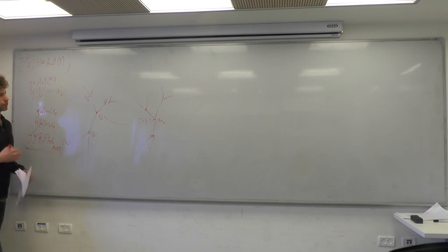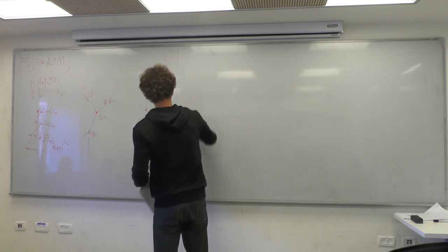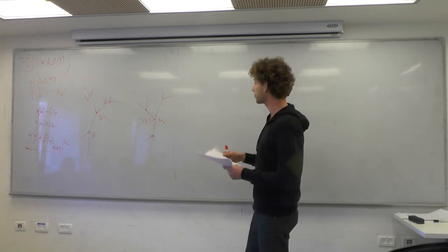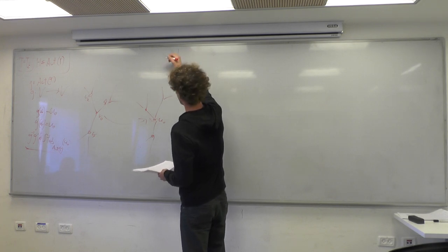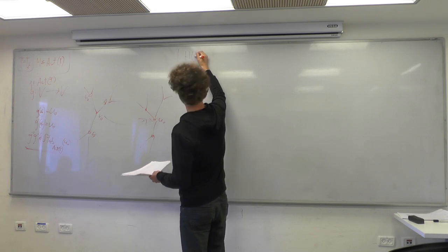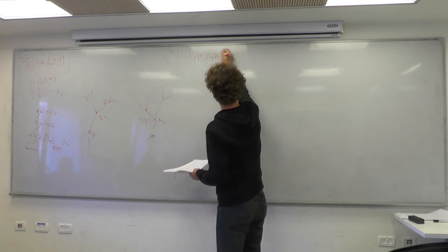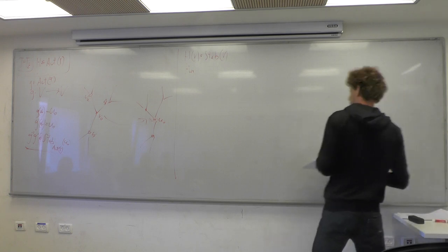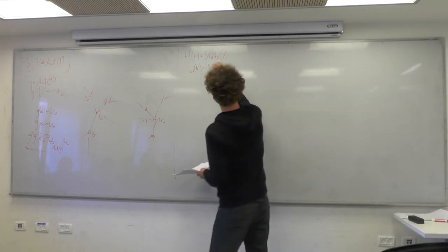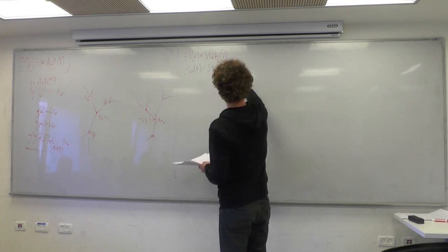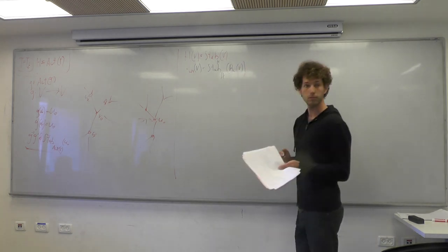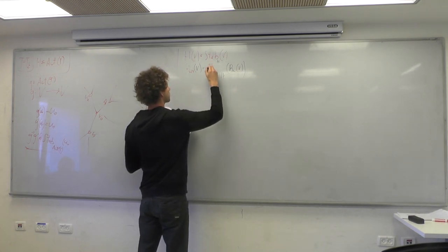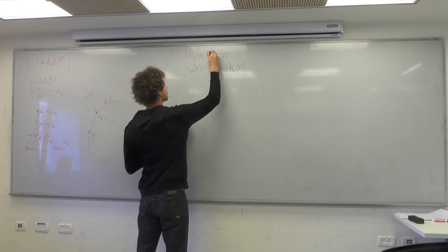In general, I can define for each H: H(v) is just the stabilizer of v in H, and H_n(v) is the fixator of the n-ball around v — meaning it fixes every point in that ball. This is the fixator, it fixes every point. For a single point the distinction doesn't matter, but in general we use 'fixator' for the pointwise stabilizer of a set.